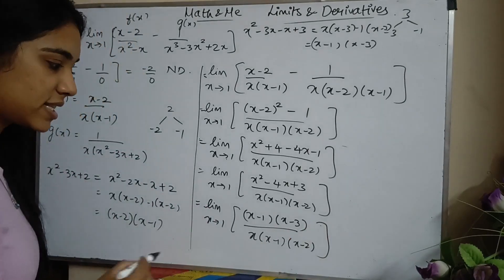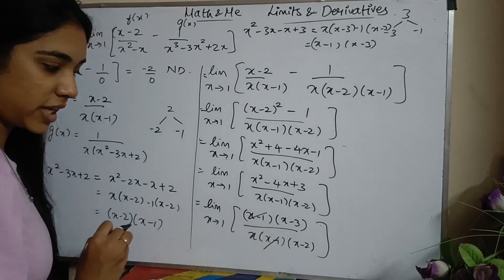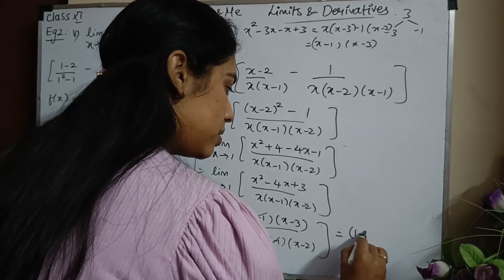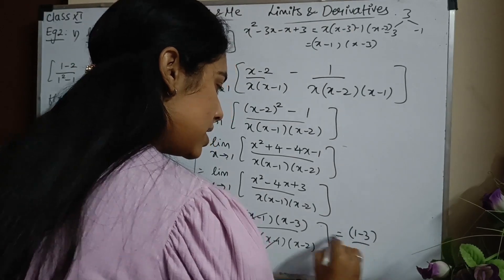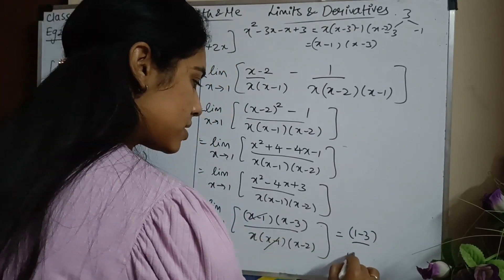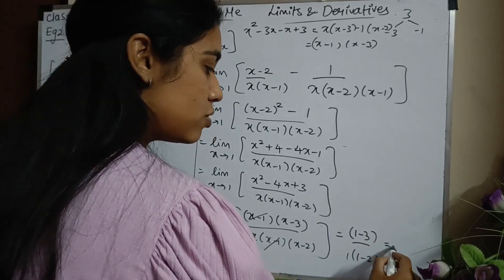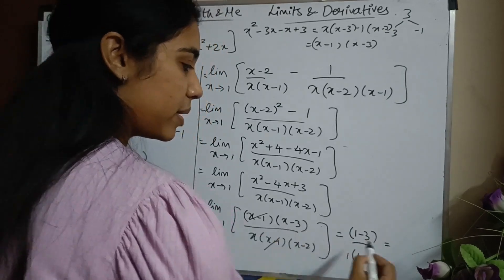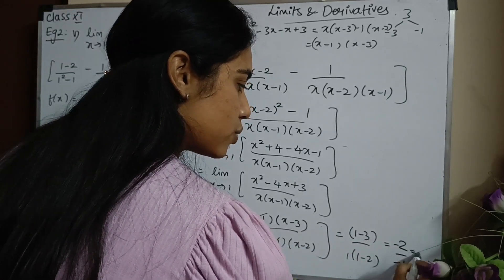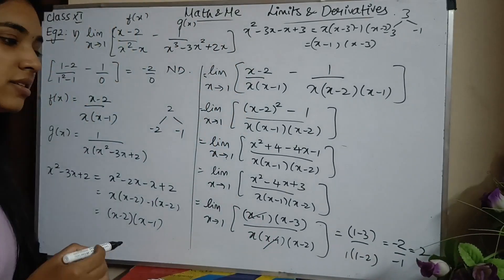The (x-1) terms in numerator and denominator cancel. Substituting x = 1 gives (1-3) / (1 × (1-2)) = -2 / -1 = 2. So the final answer is 2.